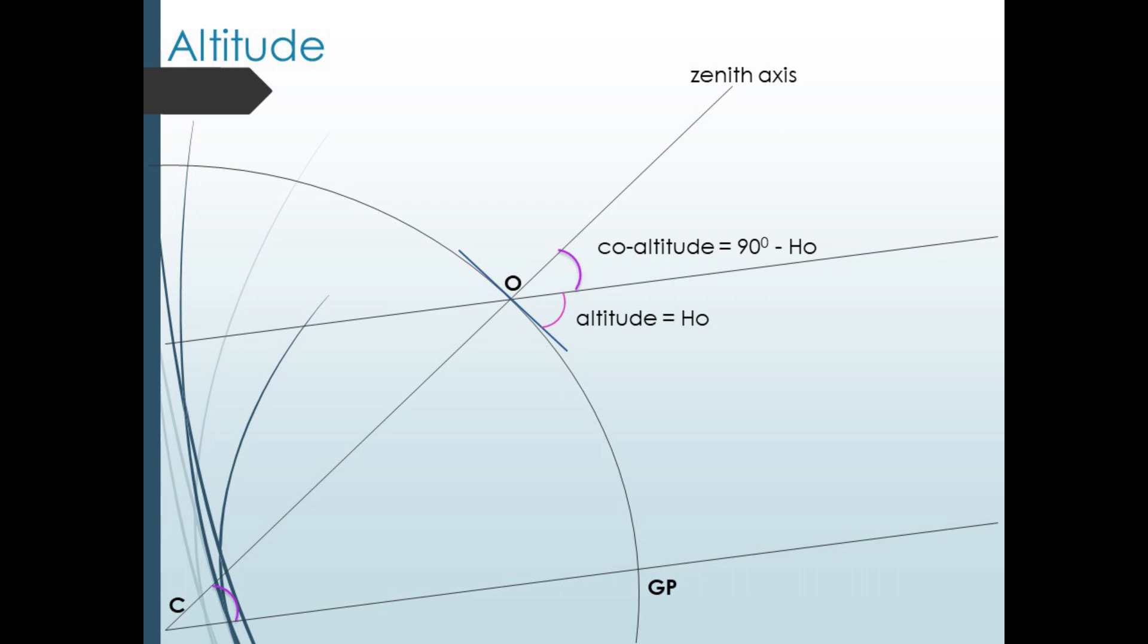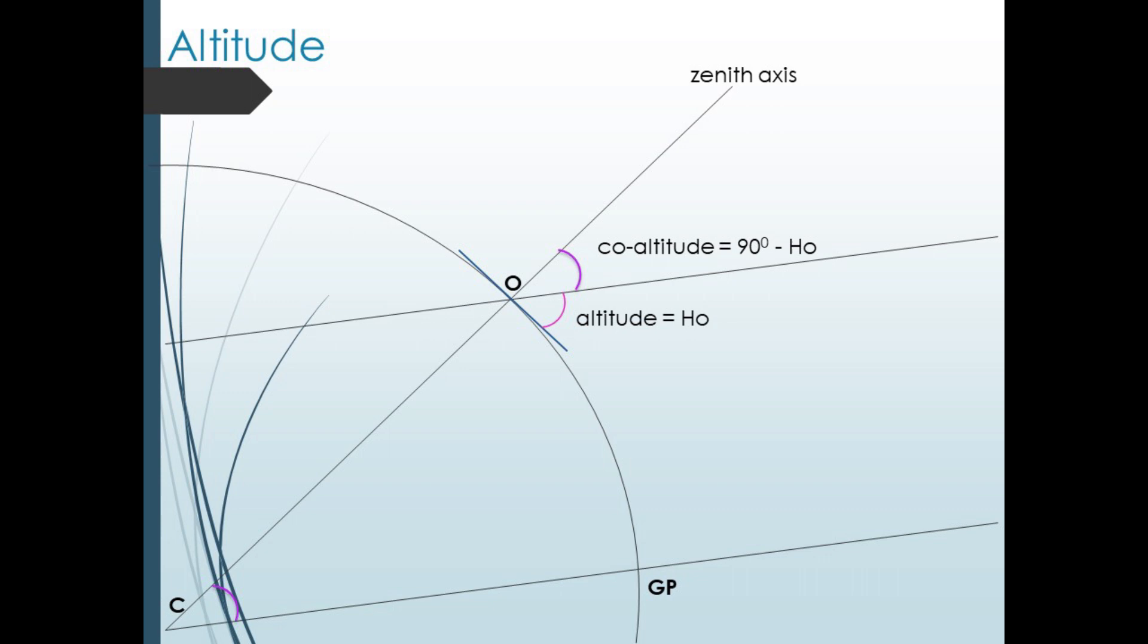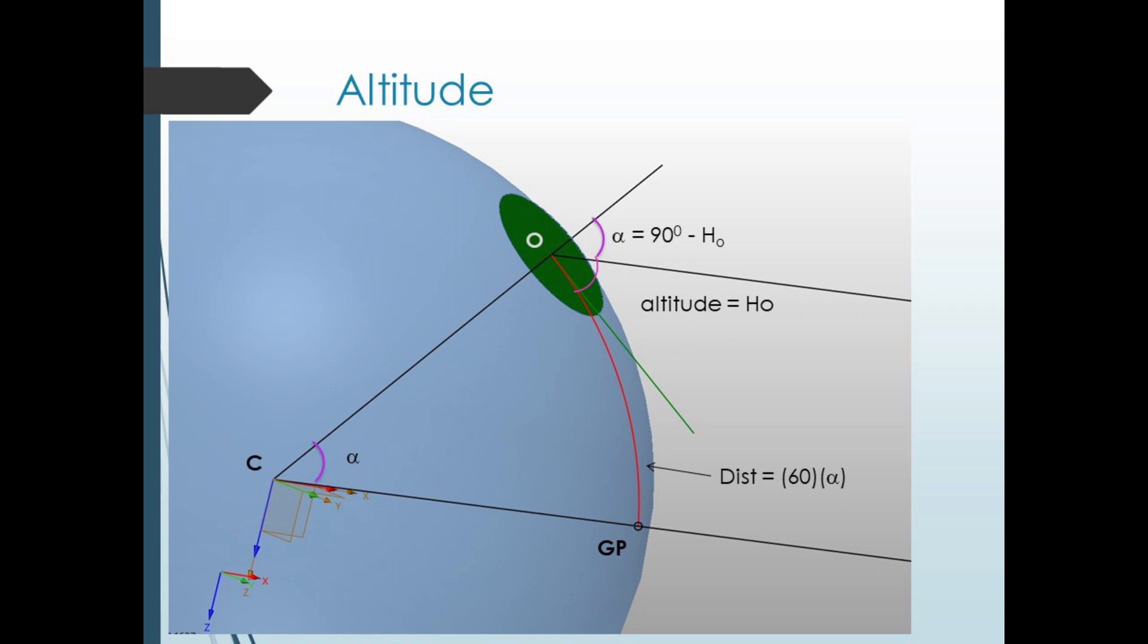Now we get an important result. Suppose we let C be the center of the Earth. Call our position O for observer, and HO is the altitude of a star. Then 90 minus HO is the angle between the star and our zenith axis, CO. This is called the co-altitude. But since we're assuming our altitude line to the star is parallel to the line going through GP of the star, this means that the co-altitude is the corresponding angle with the angle OCGP, which is the measure of the great circle arc connecting our position O to the GP of the star. So we can find the distance from our position to the GP in nautical miles by simply multiplying the co-altitude by 60.